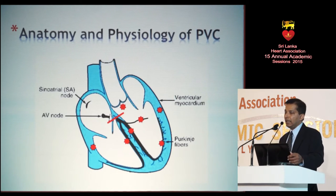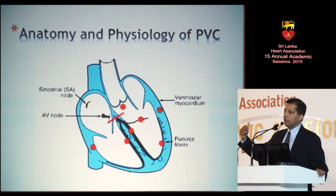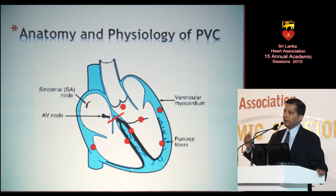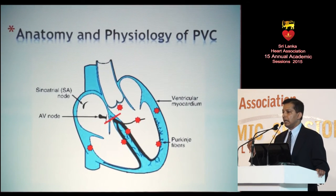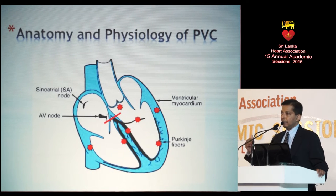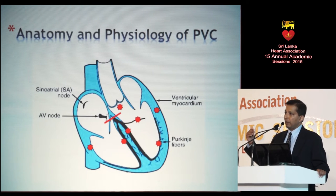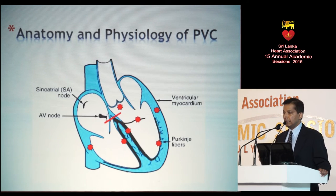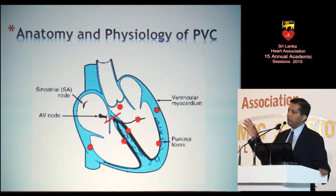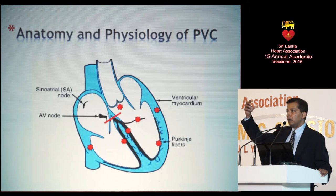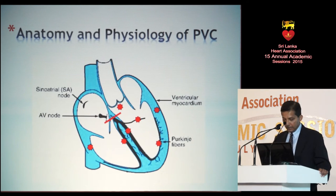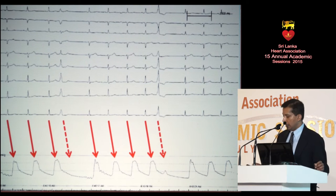What's the anatomy and physiology? PVCs by nature arise below or distal to the His bundle. In the conduction system, starting from the sinus node through the atrium to the AV node, through the His bundle — anything below the His bundle. So it could be the right bundle, left bundle, any of the fascicles, Purkinje fibers, or from the ventricular myocardium — right ventricle or left ventricle. Or even from the outflow area: right ventricular outflow tract, left ventricular outflow tract, and even from the pulmonary artery, aorta, or sinuses of Valsalva region.